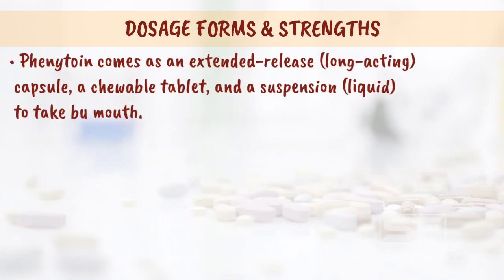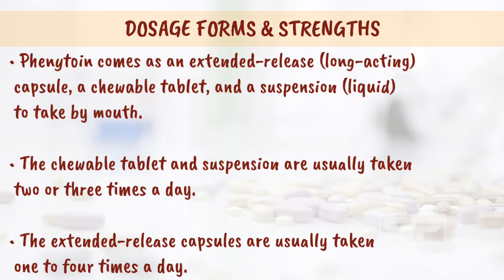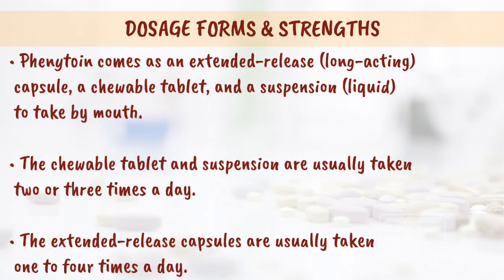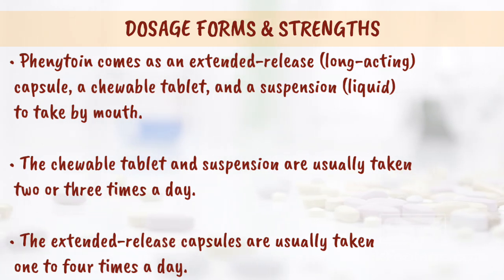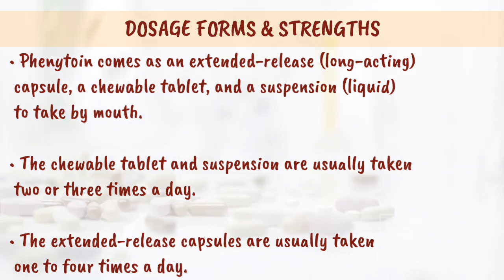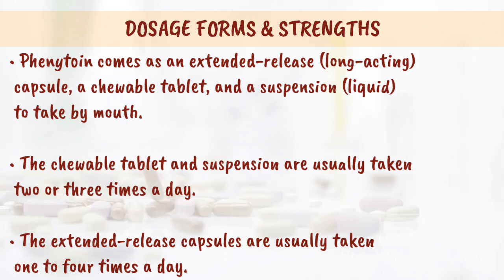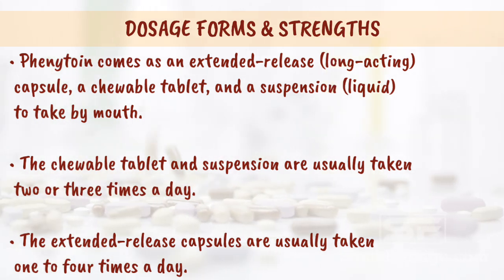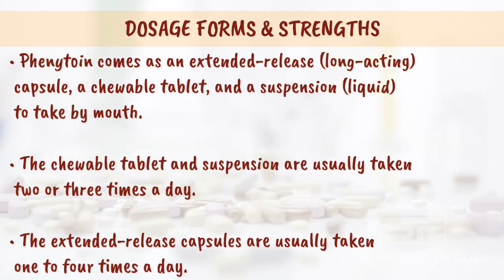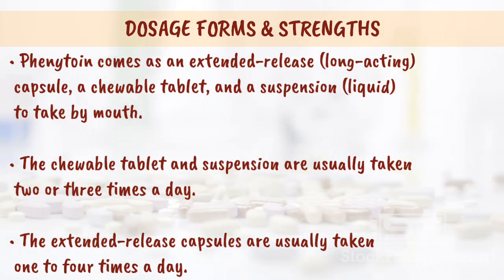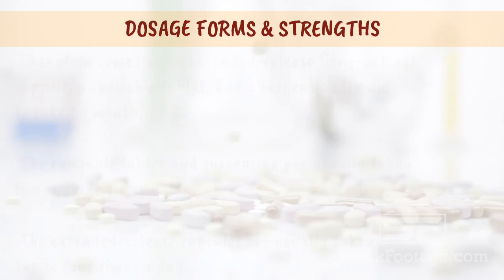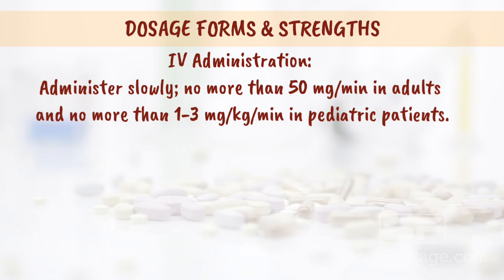Phenytoin comes as an extended release (long-acting) capsule, a chewable tablet, and a suspension (liquid) to take by mouth. The chewable tablet and suspension are usually taken 2 or 3 times a day. The extended release capsules are usually taken 1 to 4 times a day.